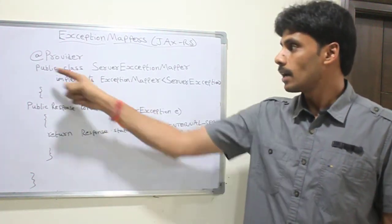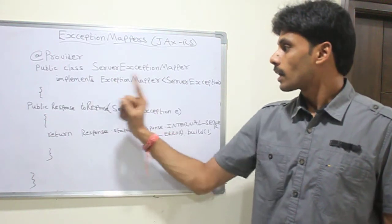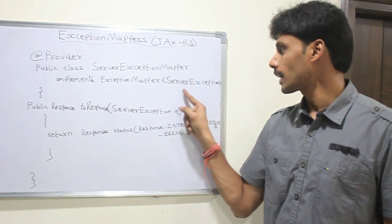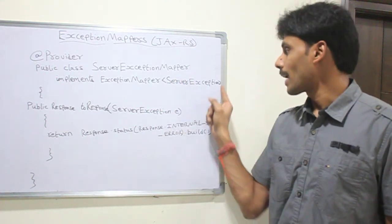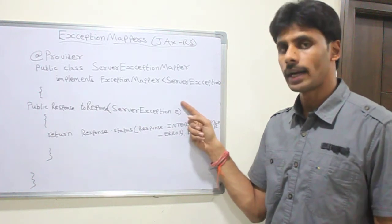So the steps are: mark your mapper with a provider annotation and that mapper class should implement an ExceptionMapper interface. The generic type of it should be your actual exception, your business exception, or it could be a third party exception which you want to handle.